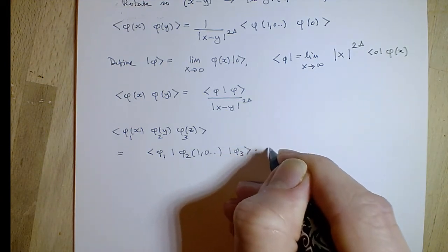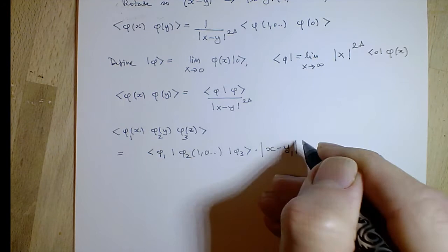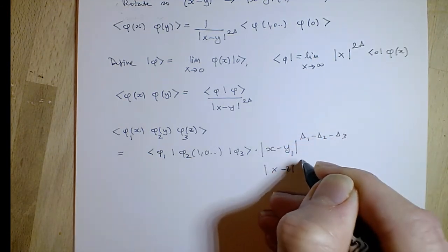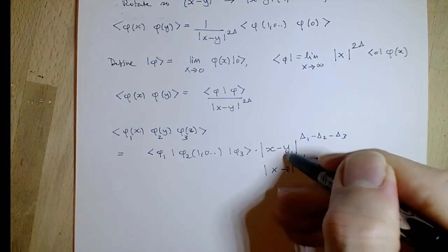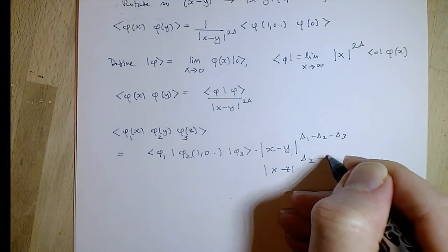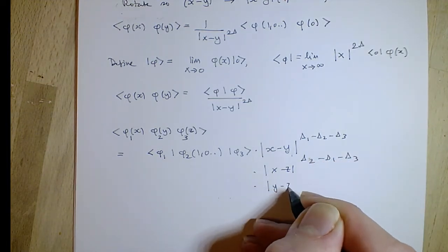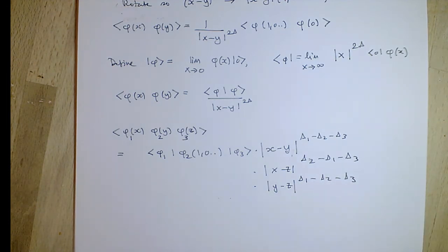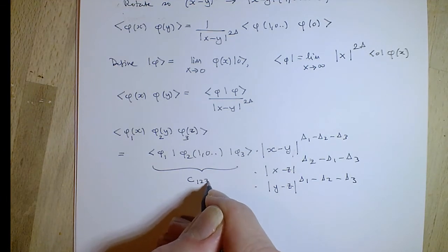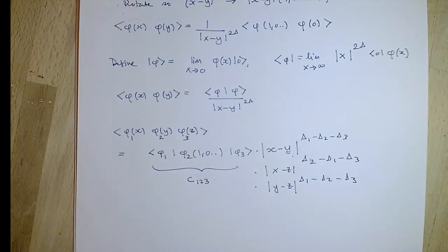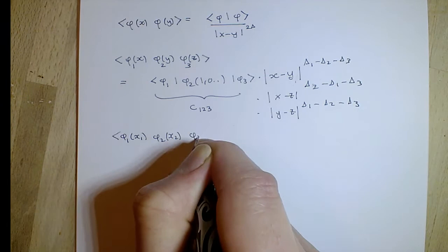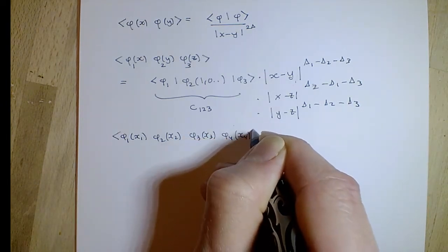The three-point function of scalar fields is likewise determined: we can send z to the origin, x to infinity, and y to (1,0). There will be a rotation involved, so this is only for scalar scaling fields in d dimensions. Then the three-point function is entirely fixed — the functional form is determined up to a numerical constant. But the four-point function's functional form is not fixed.